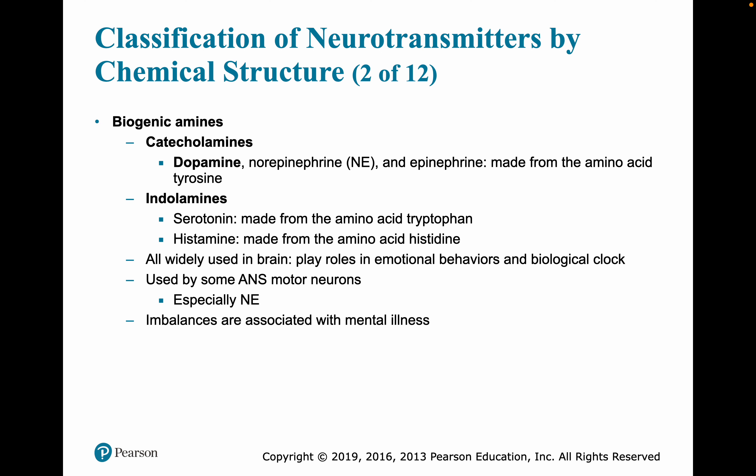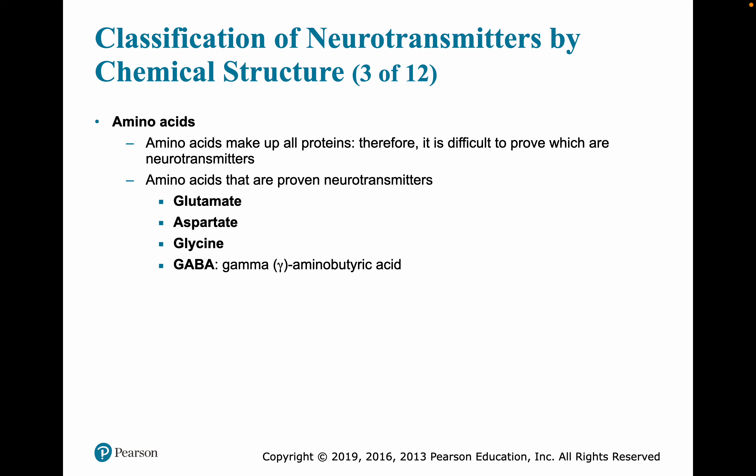There are biogenic amines, such as catecholamines — important ones include dopamine, norepinephrine, and epinephrine, which are made from the amino acid tyrosine. The indolamines include serotonin and histamine; serotonin is made from tryptophan, histamine from the amino acid histidine. These are all widely used in the brain with roles in emotional behavior and the biological clock. Some are used in the autonomic nervous system, particularly norepinephrine. These are the ones often associated with imbalances related to mental illnesses. Some amino acids are also neurotransmitters, including glutamate, aspartate, glycine, and GABA — gamma-aminobutyric acid.